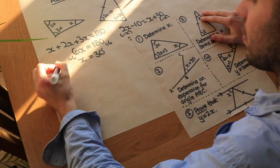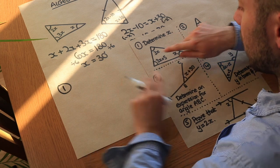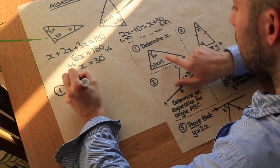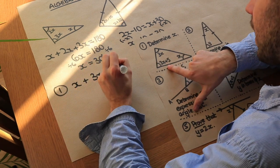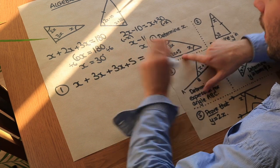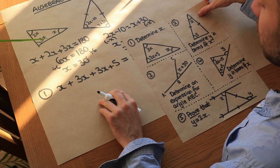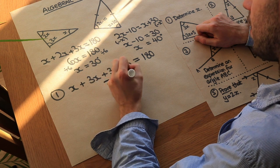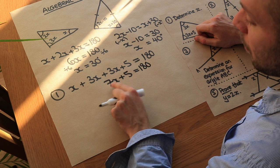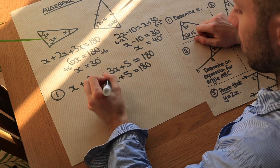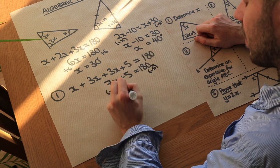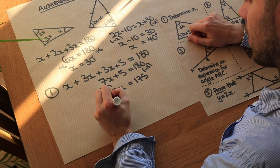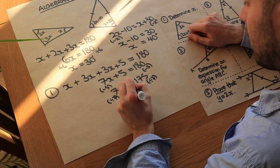Now let's solve another problem to find the value of x. We have three angles: 3x, 3x plus 5, and x. Adding them up: x plus 3x plus 3x plus 5 equals 180 degrees. Simplifying the left-hand side: x plus 3x plus 3x is 7x, so 7x plus 5 equals 180. Subtracting 5 from both sides gives 7x equals 175. Dividing both sides by 7 gives x equals 25 degrees.